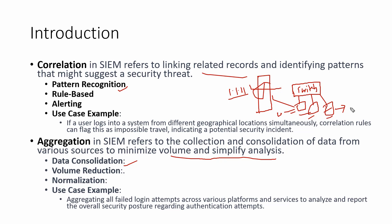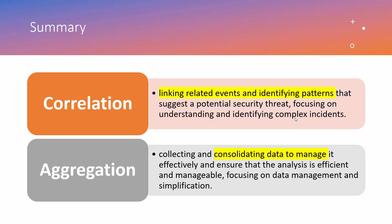On the other side, aggregation refers to collecting and consolidating data from various sources to minimize volume and simplify analysis. We consolidate and combine log and event data from various sources into a unified format. For example, System A is Windows and System B is Linux — Linux generates logs in a different format than Windows. So we consolidate the logs, normalize the logs, and reduce the volume by consolidating similar or repeated data. Normalization converts data into a common format. The role of aggregation is to convert data into a common format — aggregating all failed login attempts across various platforms to analyze and report the overall security posture regarding authentication attempts.